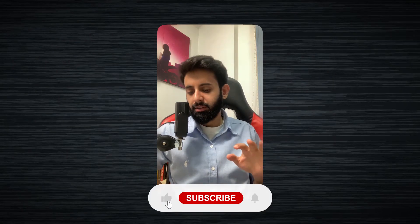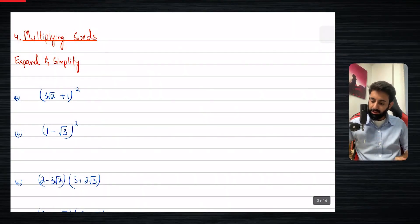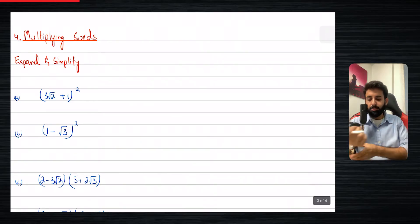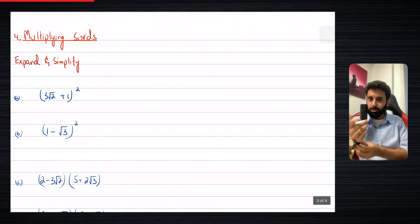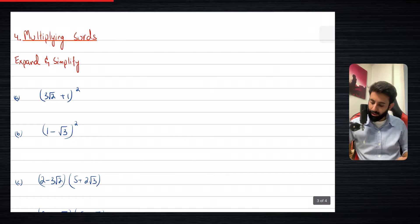Welcome back. As promised, in this video I will show you how to multiply surds. The question says expand and simplify. Whenever the question says expand, that means getting rid of the brackets. Whenever it says simplify, that means you collect all the like terms that can be further added or subtracted.